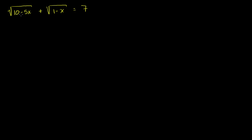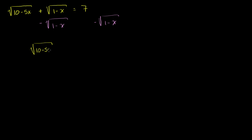We can isolate this one right here by subtracting this radical from both sides of this equation. So you subtract the square root of 1 minus x from both sides — those cancel out on the left — and you're left with: the square root of 10 minus 5x is equal to 7 minus the square root of 1 minus x. All I did is subtract this from both sides, essentially moving it over to the right-hand side.